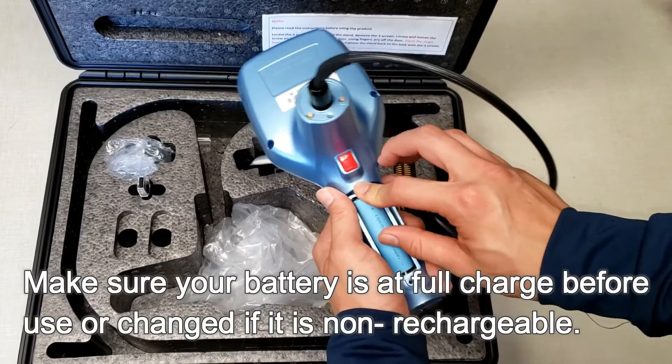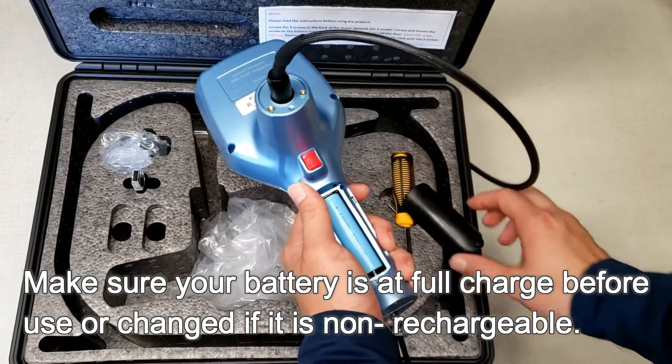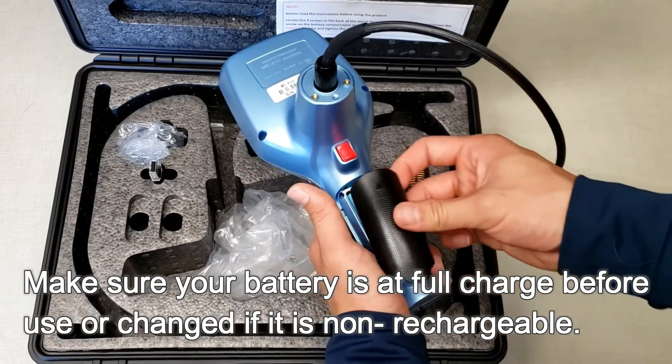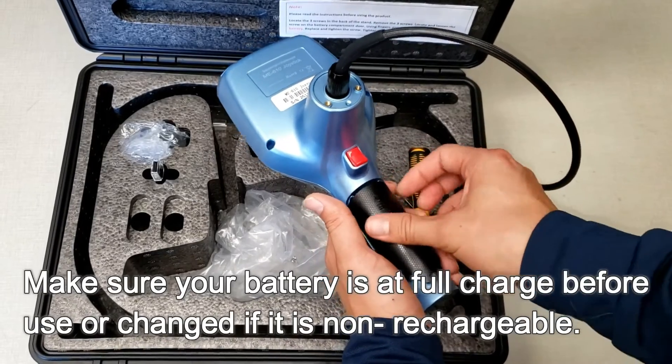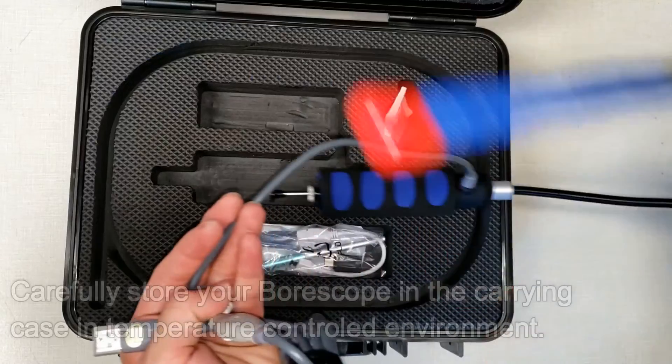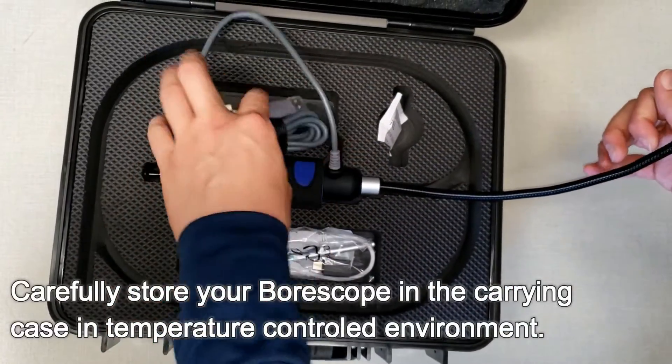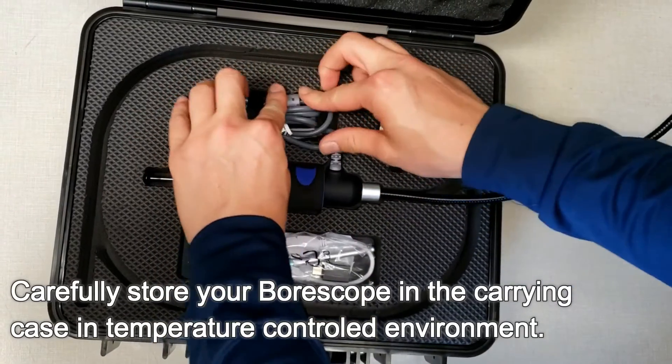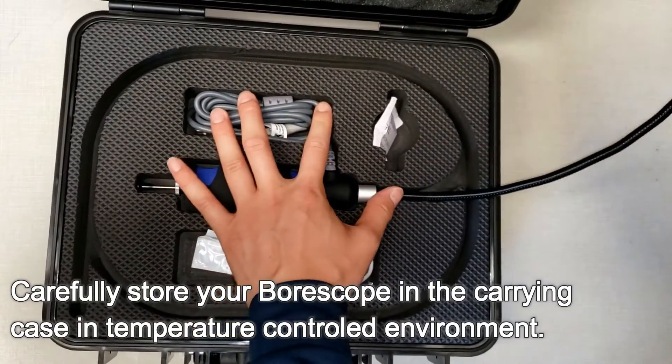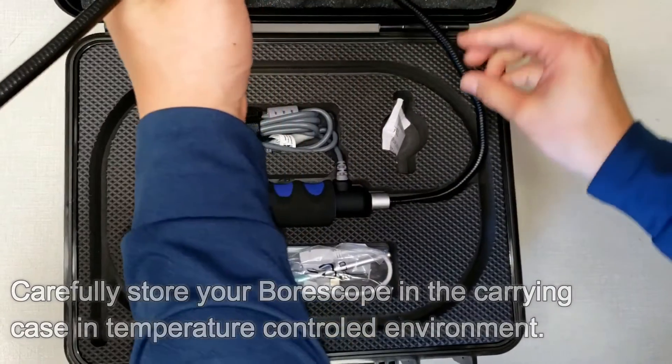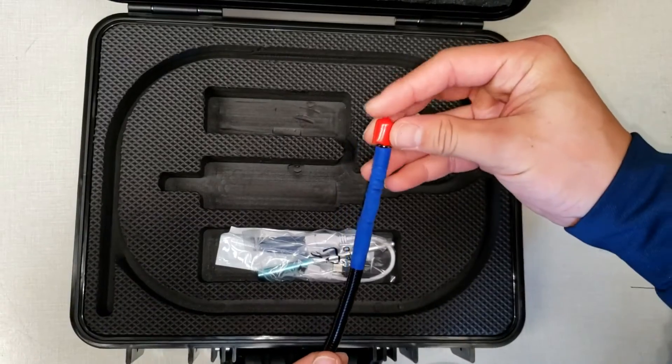Make sure that your unit's battery or batteries are charged before each use if the battery is rechargeable and changed on a regular basis if they are not. Always make sure to safely store your boroscope in a cool, temperature-controlled environment with the boroscope carefully placed in the case and camera cap placed on the tip if your kit includes one.